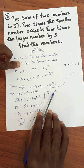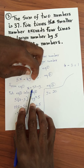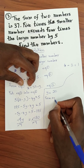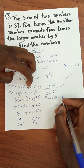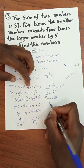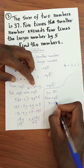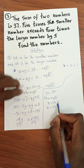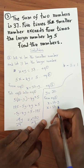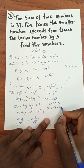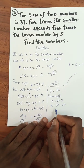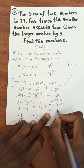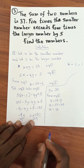Now let's find the smaller number. Going back to equation three: x equals 37 minus y. Substituting y equals 20, we get x equals 37 minus 20, which is 17.